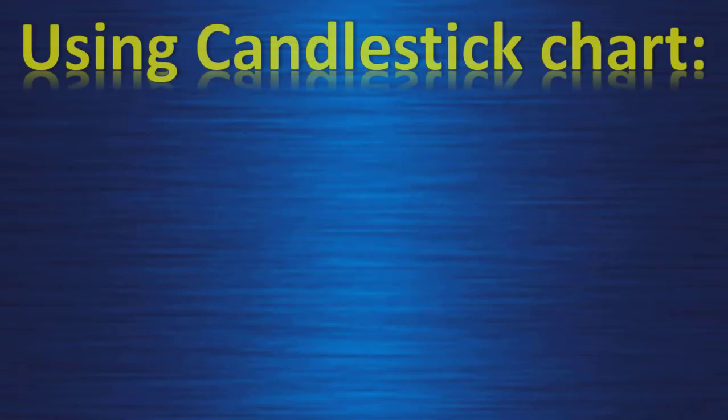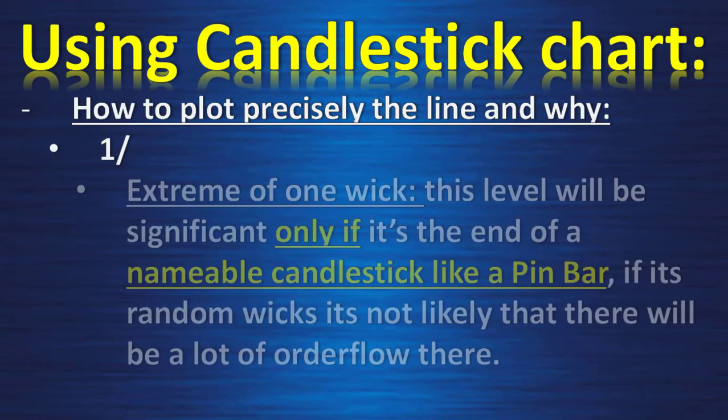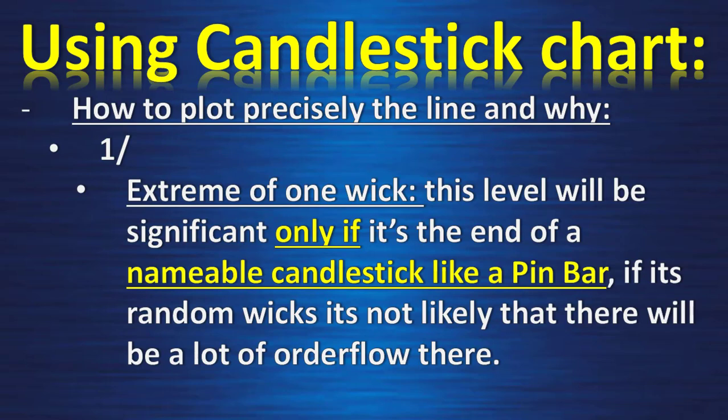So using the candlestick chart, how to plot the line precisely and why. First way: the extreme of one wick. This level will be significant only if it is the end of a nameable candlestick like a pin bar. If it is a random wick, it is not likely that there will be a lot of order flow positioned there.